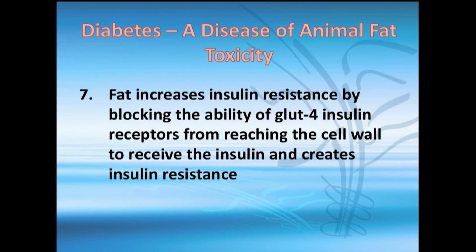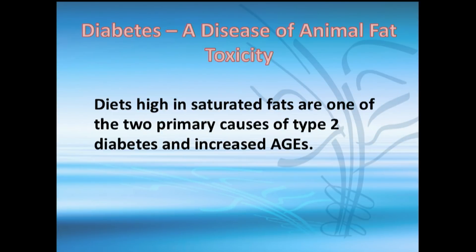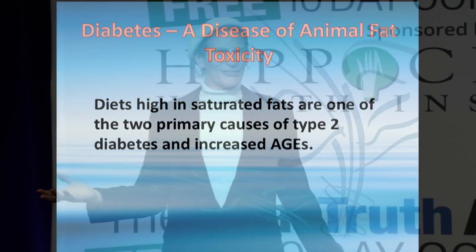Animal fat creates insulin resistance by blocking the GLUT4 receptor sites on the cell wall and inside. The key message is: don't just think sugar — think animal protein and fat, animal fat first and animal protein second. We're not just talking about calories when we talk about diabetes. Plant food is far more diabetic-protective than animal protein and fat.